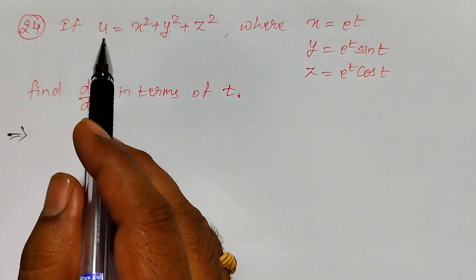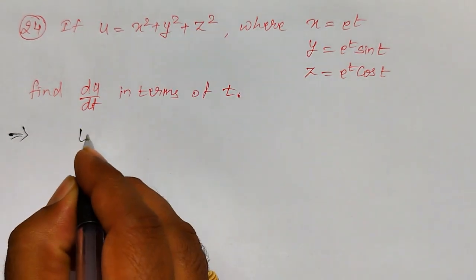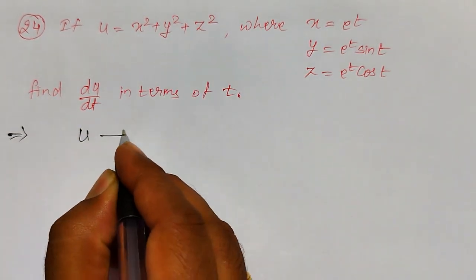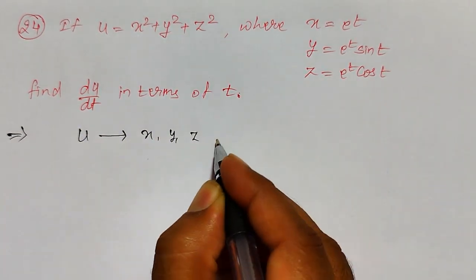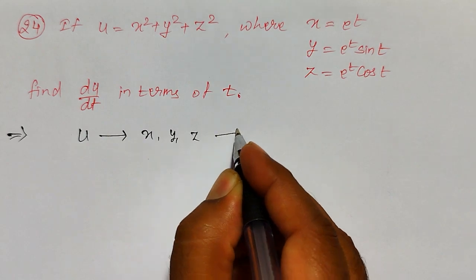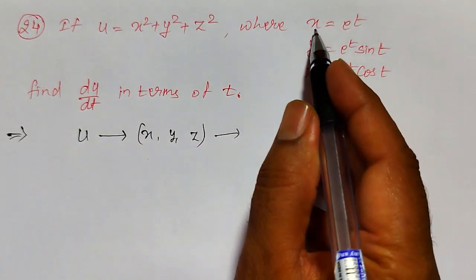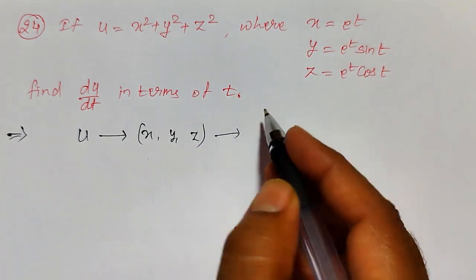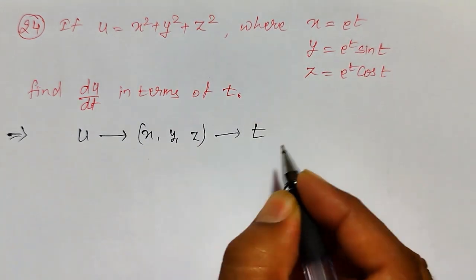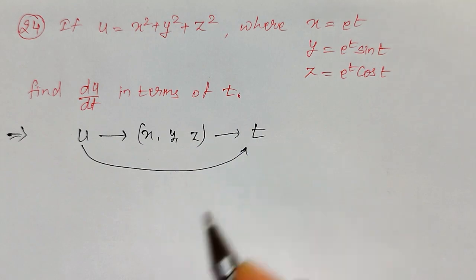Here what you can observe: u is a function of x, y, z. And again, these x, y, z are the functions of single variable t.